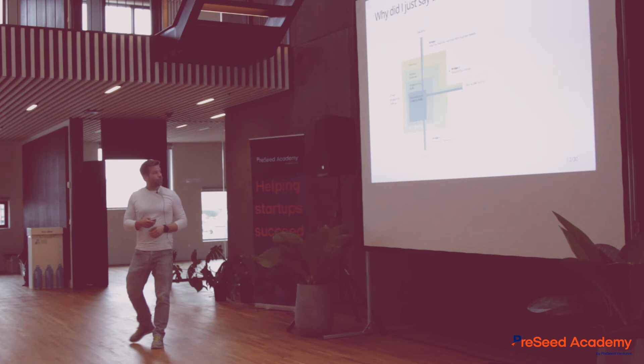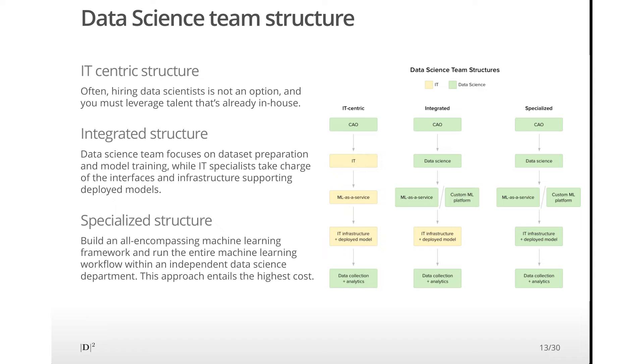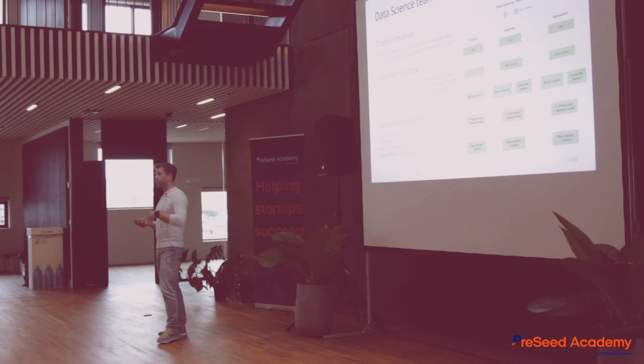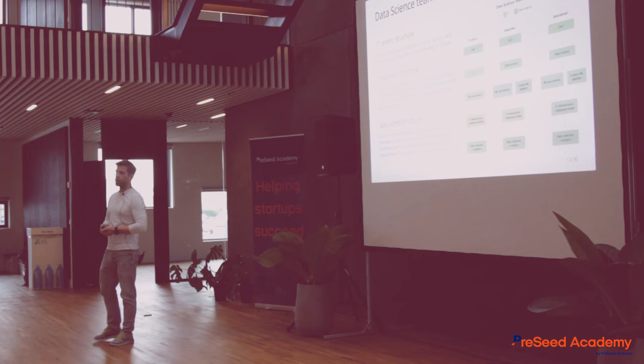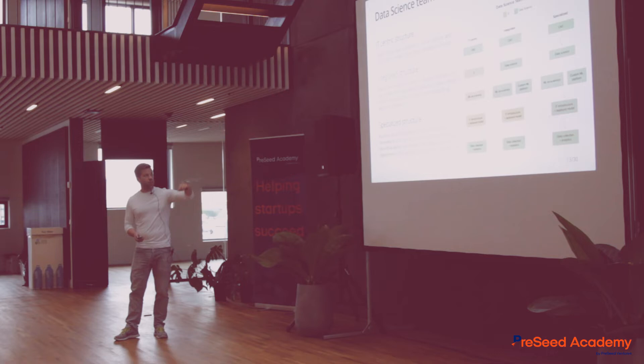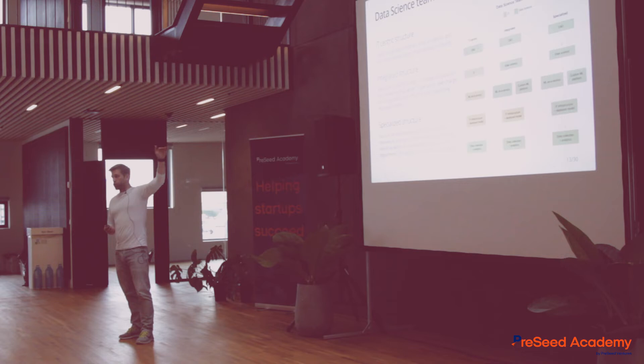There are basically three main structures you can take. The first, which you should probably select if you're not very interested in AI and don't need anything bespoke, is the IT-centric approach. There, IT is responsible for using and deploying your machine learning models, and there are numerous vendors — Google, Amazon, Microsoft and others — that have platforms for this, called MLaaS, where you can even have the infrastructure. This means you're responsible for what you want to get out of it and the analytics afterwards. It's the cheapest way of running things if you can control the costs.